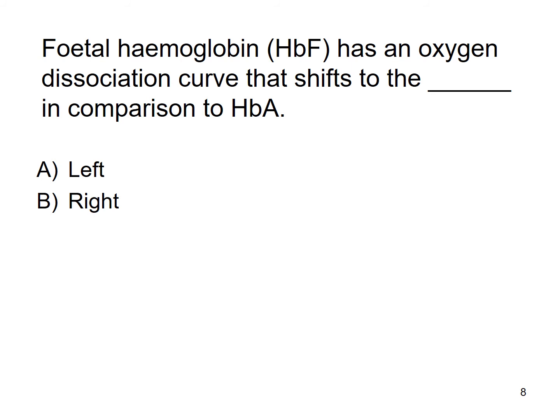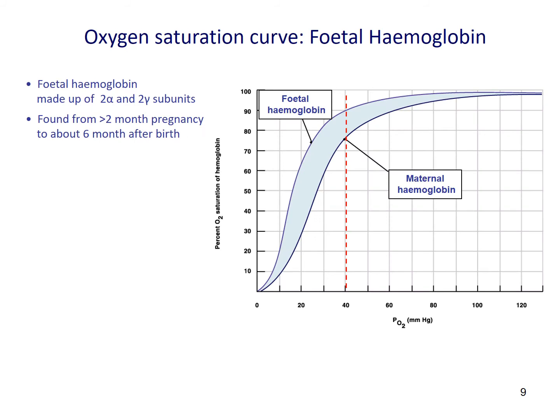Here is a question to test your understanding — you may pause the video for a moment. The answer is A, left hand side. As mentioned, fetal hemoglobin (HbF) will require a higher oxygen affinity to extract oxygen from the mother's blood, and to achieve that, the oxygen binding curve must be shifted towards the left hand side.